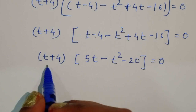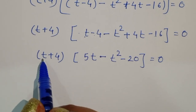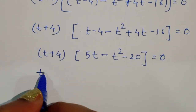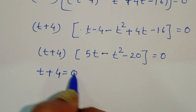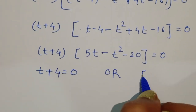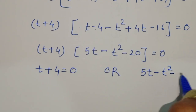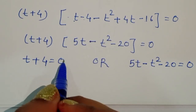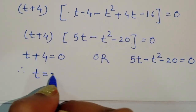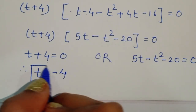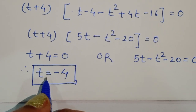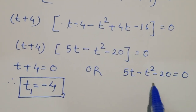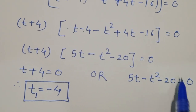We now have two equations: the first is t plus 4 equals 0, and the second is 5t minus t squared minus 20 equals 0. From the first equation, t plus 4 equals 0, therefore t equals minus 4. So our first value is t₁ equals minus 4. Now we need to solve the second equation: 5t minus t squared minus 20 equals 0.